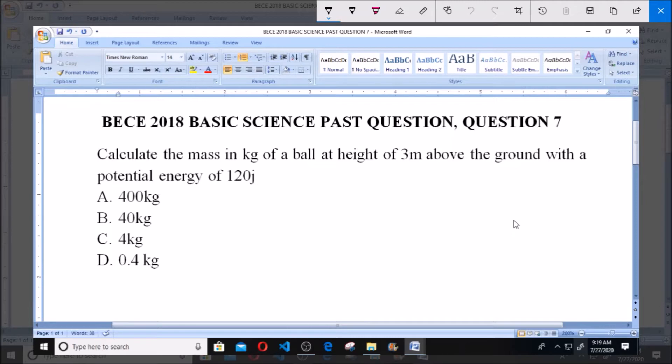BECE 2018, Basic Science Past Question, Question 7. Calculate the mass in kg of a ball at height of 3 meters above the ground with a potential energy of 120 joules.